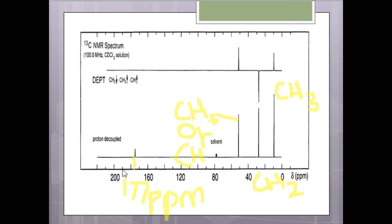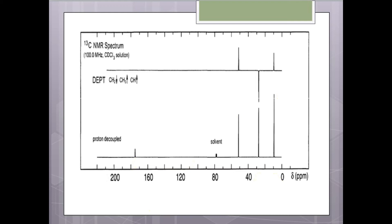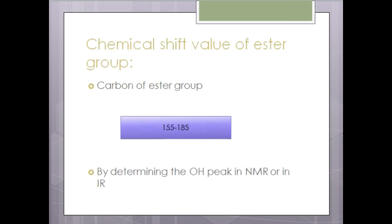The ester group does not give a ppm value at 11–12 for hydrogen, while carboxylic acid gives information about the OH group at 11–12 ppm. The carbonyl region for ester or carboxyl groups comes at 155–185 ppm in the C13 NMR spectrum.